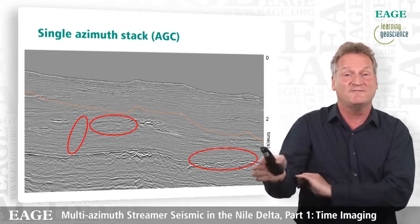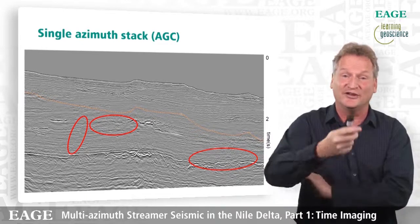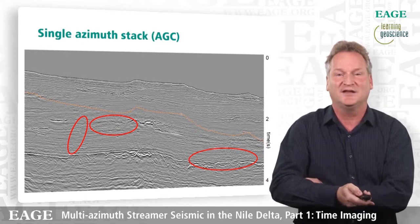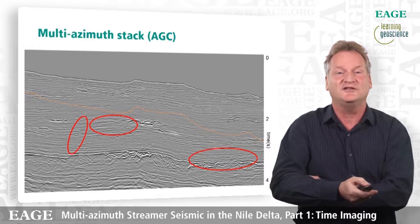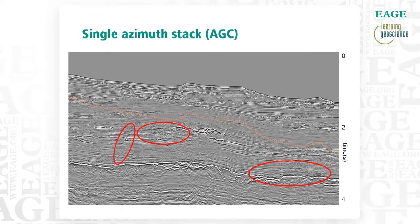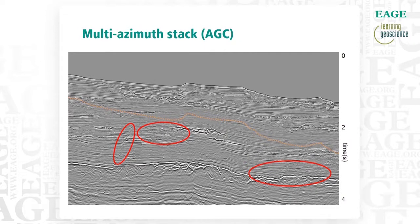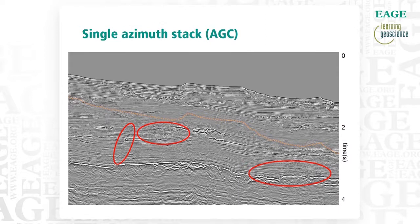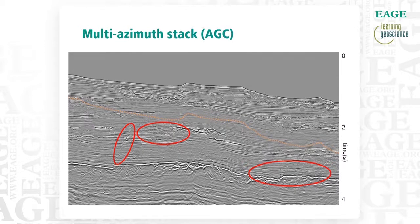These six volumes are stacked together with all the trim statics applied. Looking at this multi-azimuth image, you immediately see that the signal-to-noise ratio has improved — that's definitely what we were after. Going back and forth between single and multi-azimuth, you can also see that the leftmost red oval shows improved resolution on the fold — it's a lot sharper. On the right side too, the image is a lot better.